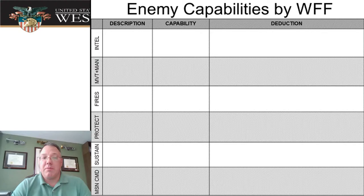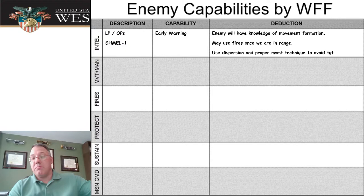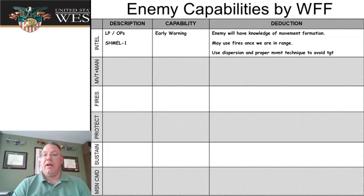The third slide in the battle book is enemy capabilities by warfighting function — it's a table with all six warfighting functions. We're looking for a description of what that capability is and then a deduction — the so-what, what will it impact on our mission — just like we did in terrain analysis. For example, intel: description — they've got LPOPs and a Schmel-1 UAV system. Capability — that gives them early warning. Deduction — the enemy will have knowledge of our formations, could use fires on us once we're in range, so we need to use dispersion and proper movement techniques to avoid being targeted.